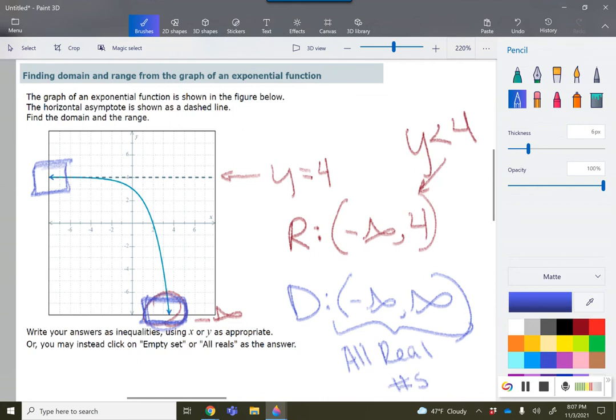For your domain or range, you're going to look to see where the asymptote is. That's going to be a restriction, either the top or the bottom. Then see which way it is: is it above or below, or is it left or right? Because if there's an asymptote, that's going to be a restriction.